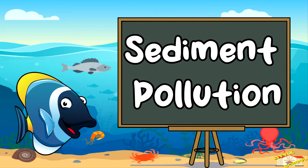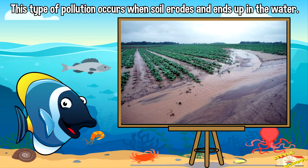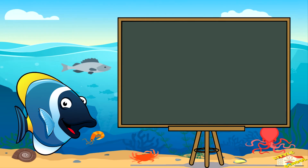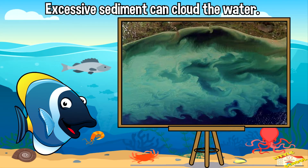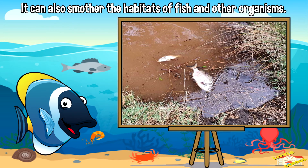Sediment pollution: this type of pollution occurs when soil erodes and ends up in the water. Excessive sediment can cloud the water, making it difficult for aquatic plants to receive sunlight and for animals to see their prey. It can also smother the habitats of fish and other organisms.